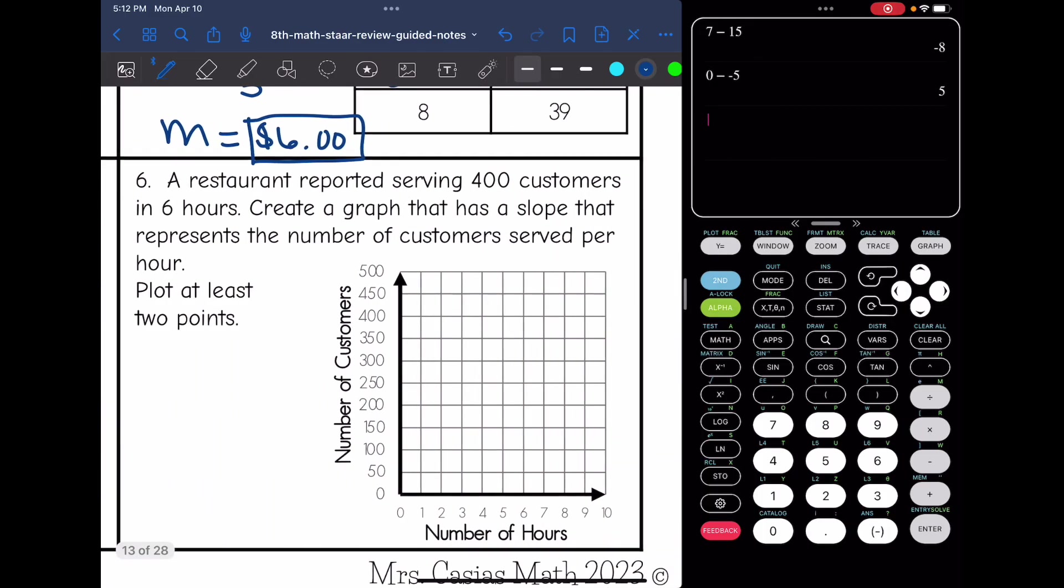And then the last question says a restaurant reported serving 400 customers in six hours. Create a graph that has a slope that represents the number of customers served per hour. Plot at least two points. So 400 customers in six hours, I'm going to go ahead and plot that. 400 customers is up here, six hours is right here. So that point would be right here. And it didn't say I had a starting fee. So that means I would start at the origin. So there would be your graph, just draw your line between those two points.